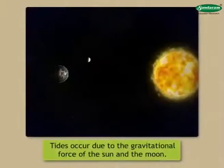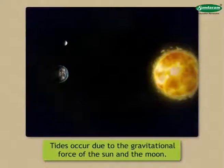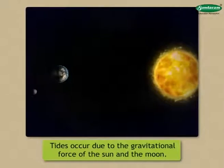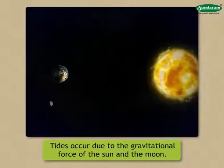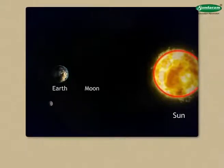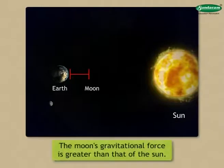Tides occur due to the gravitational force of the sun and moon and the centrifugal tendency generated on the earth as a result of the relative motions of the sun, the moon and the earth. The sun is a larger body, but as the moon is closer to the earth, the moon's gravitational force is greater than that of the sun.